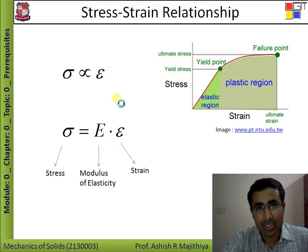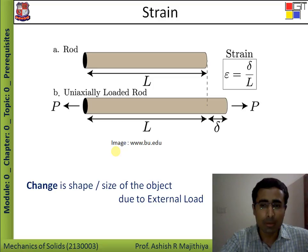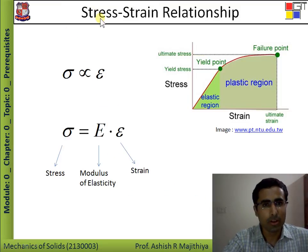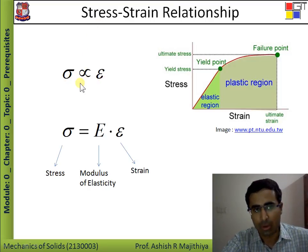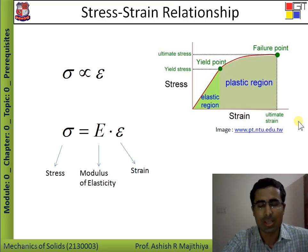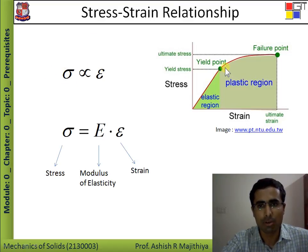That brings us to the relation between stress and strain. Stress is directly proportional to strain — higher the stress, more the elongation or strain. The constant of proportionality is the modulus of elasticity, which is a property of the material that we will understand further in Module 3. Looking at the stress-strain graph, up to a certain point the stress is directly proportional to strain — that point is called the limit of proportionality, and this region is the elastic region. After that, in the plastic region, this direct proportionality equation is no longer followed.